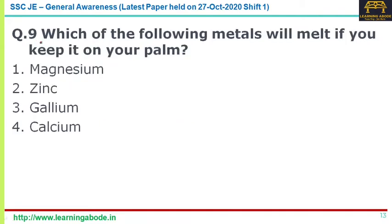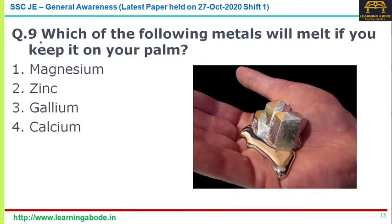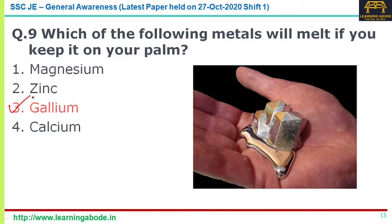Question number nine: which of the following metals will melt if you keep it in your palm? The answer is option three — gallium. Its melting point is 29.76 degrees Celsius, which is why it melts in our palm.